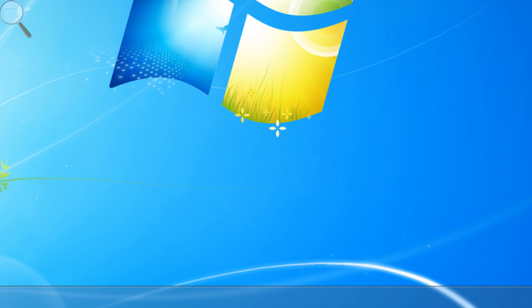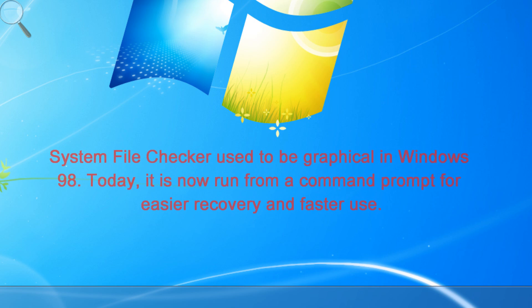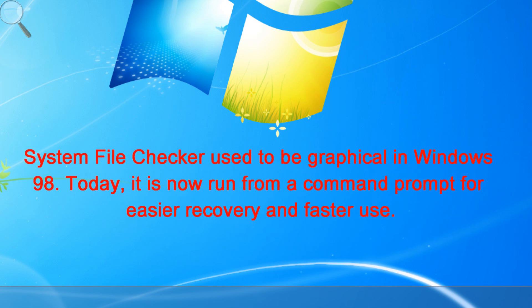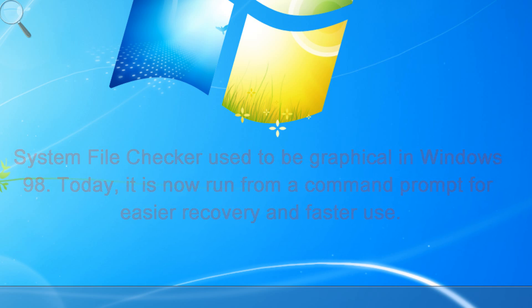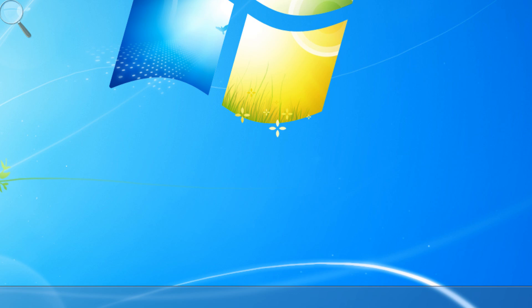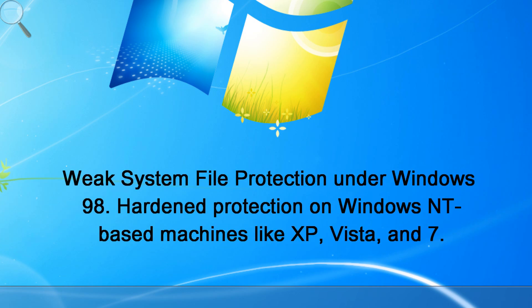System File Checker was introduced on Windows 98 as a graphical user interface utility. It offered scanning and restoration of corrupted system files by matching the version number against a database containing the original version determined by file extension and file path. It was able to restore files from the installation media or a source specified by the user.